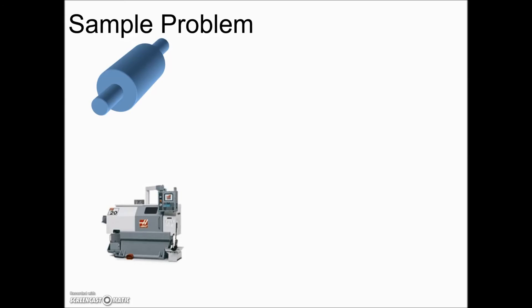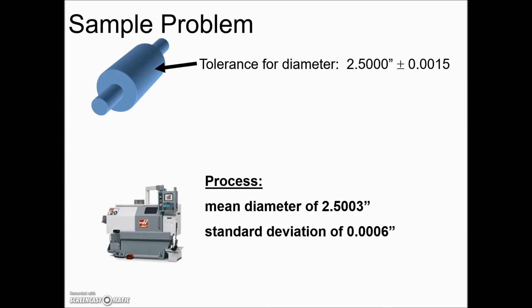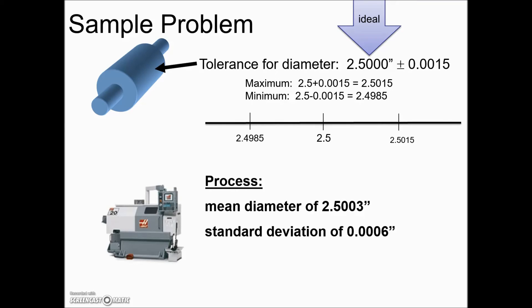And to illustrate this, let's look at manufacturing process. Samples were taken, a mean diameter of this part is given with a standard deviation. The manufacturer or the designer has specifications of an ideal measurement of 2.5 inches plus or minus 0.0015 inches. To find the maximum, we add the tolerance and subtract the tolerance from the ideal measurement. To know whether the process is in control and meeting the specifications of the design, we will graph the ideal measurement, the maximum and minimum.